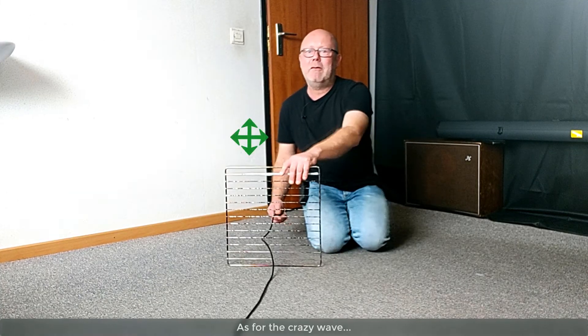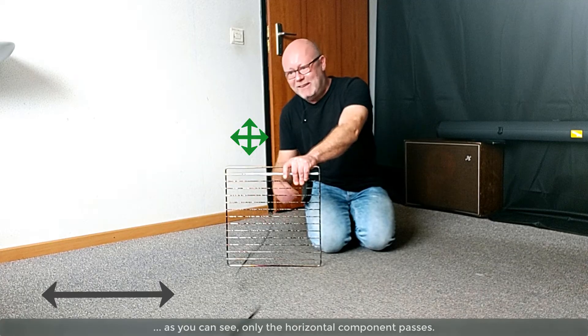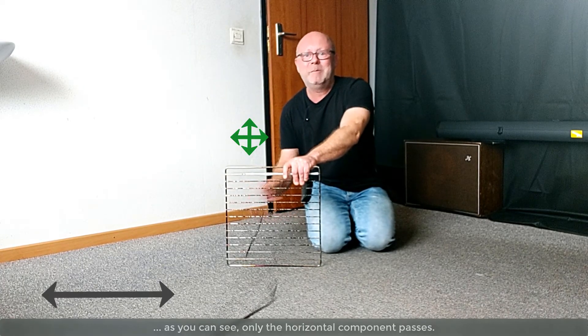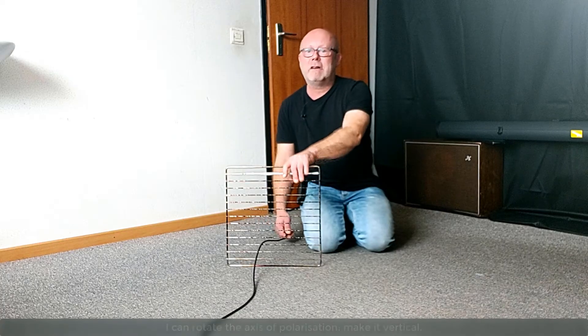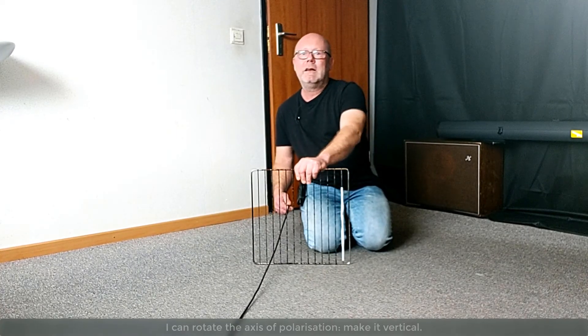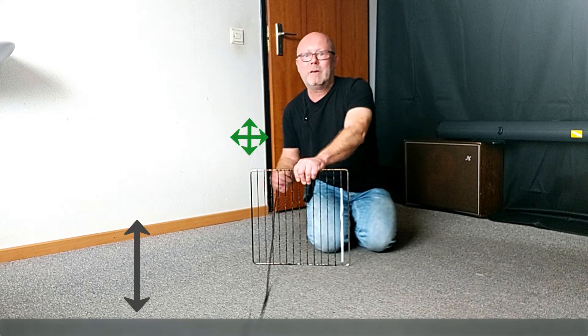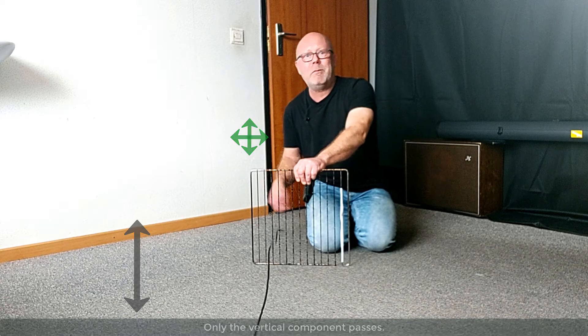As for the crazy wave, I can rotate the axis of polarization. Make it vertical. Now it is the horizontal component which is blocked. Only the vertical component passes.